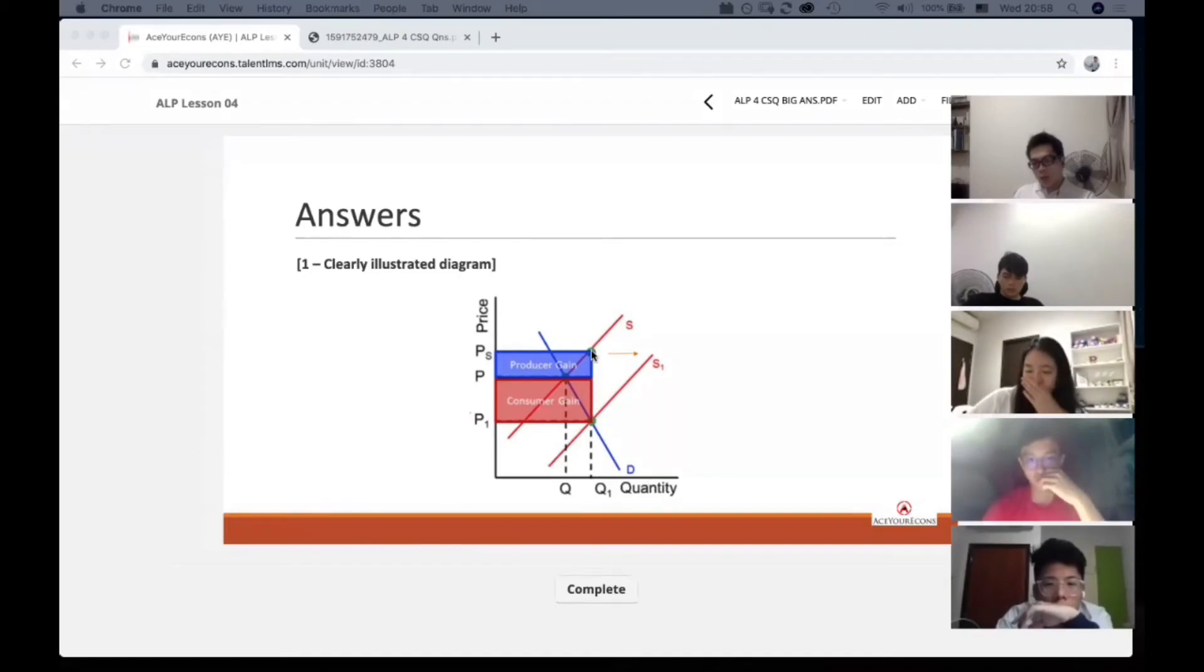Whereas, the consumer will pay P1. So you can see that between the two, initially, the producer is getting paid P, and the consumer has to pay P.